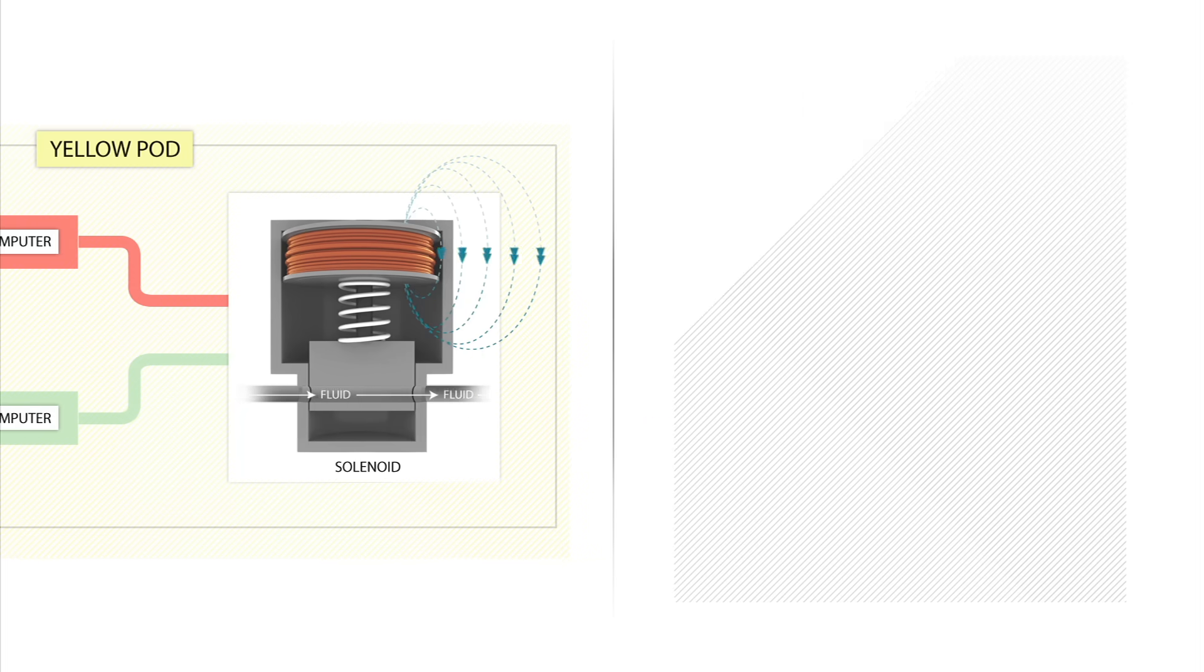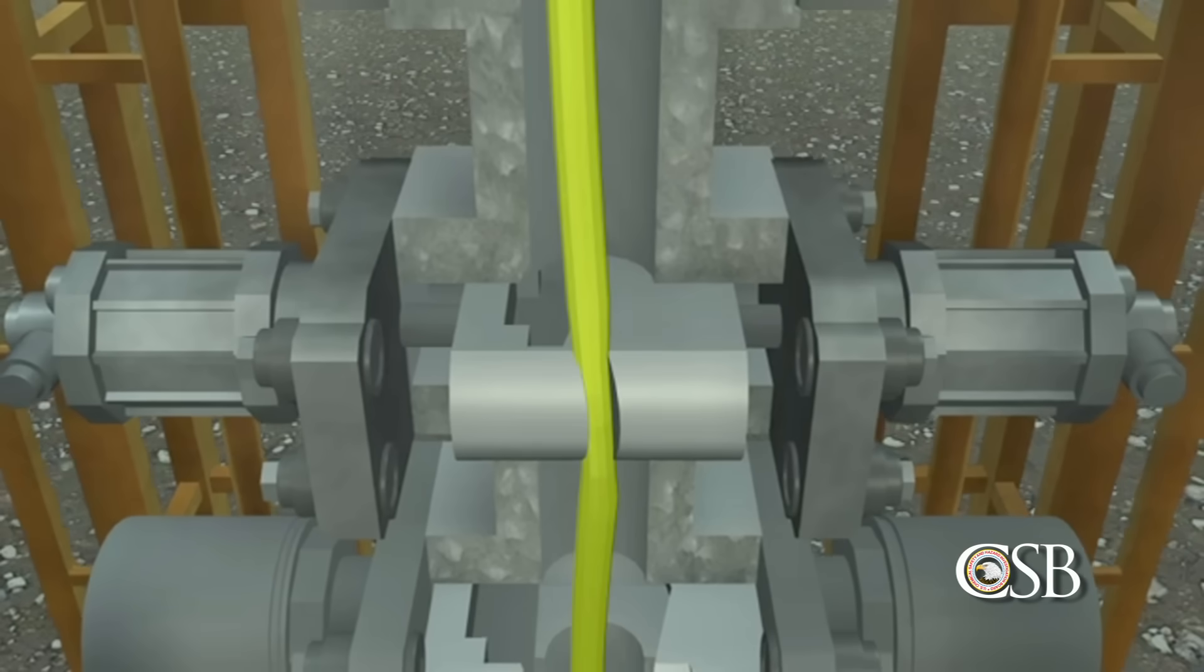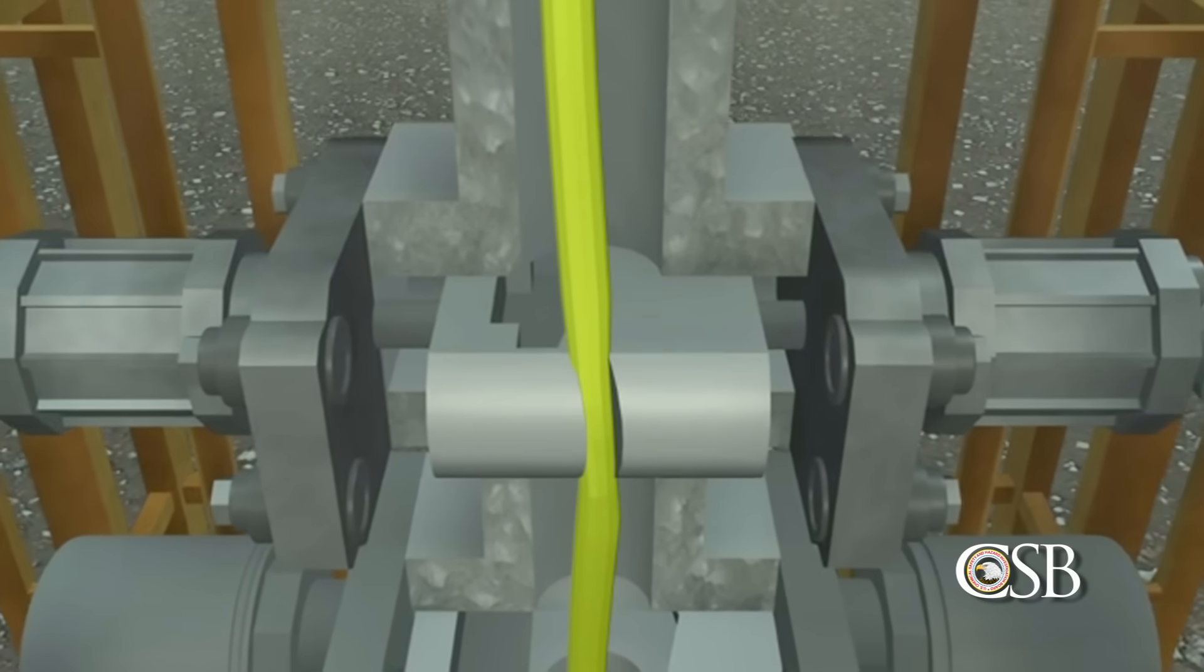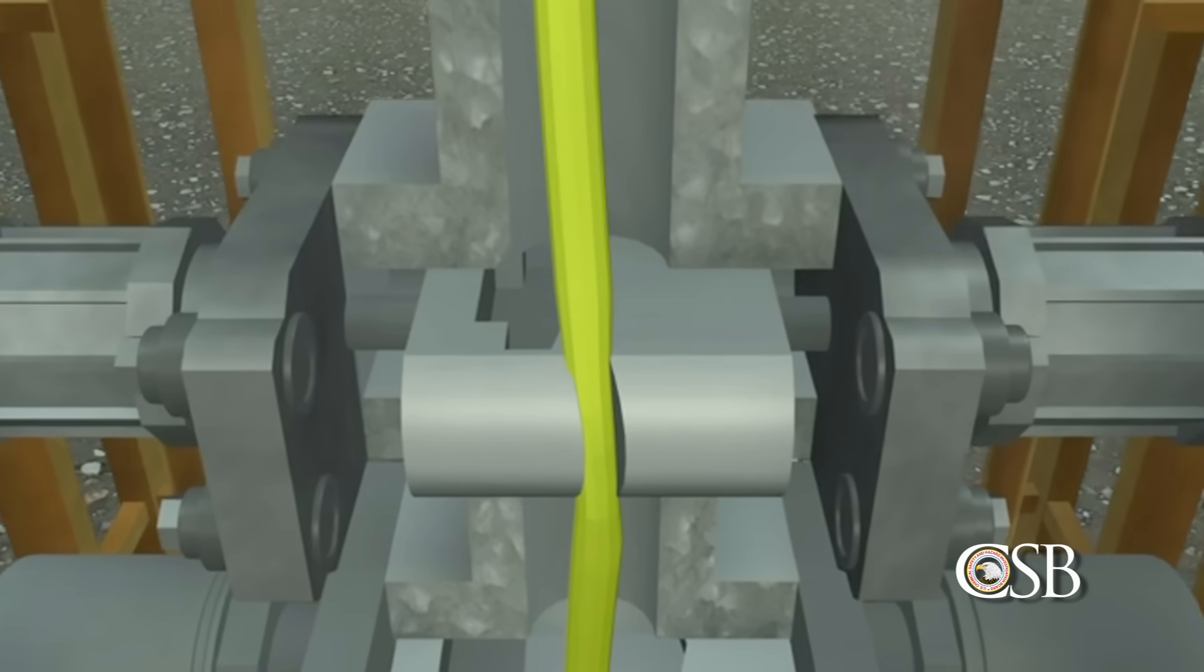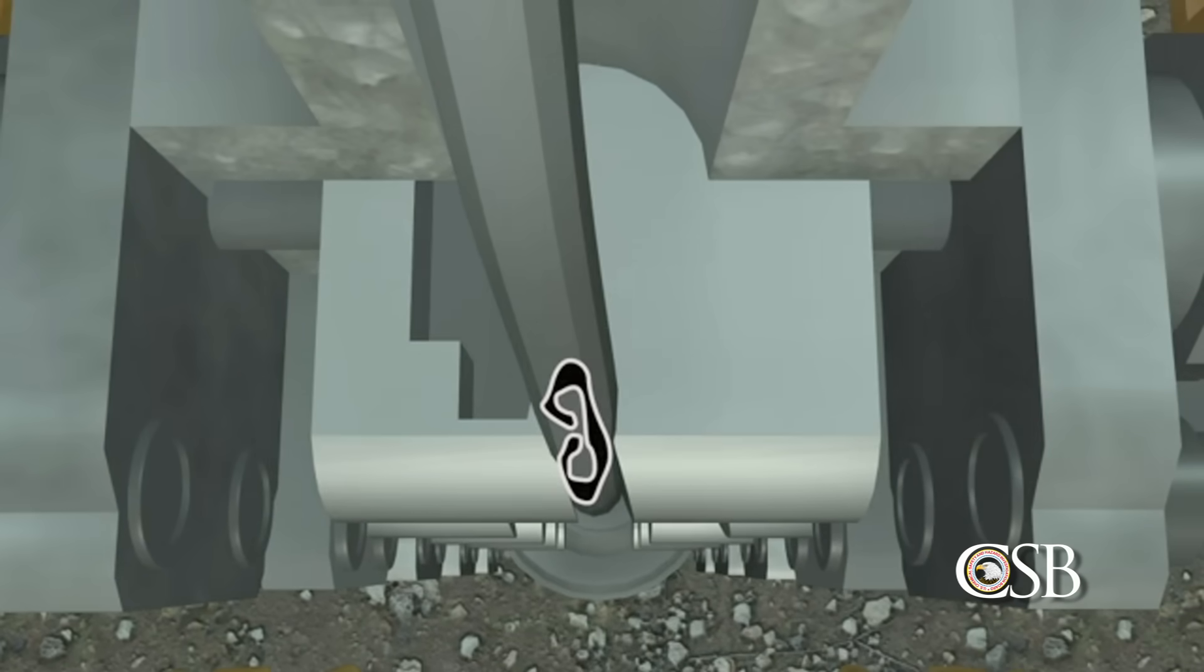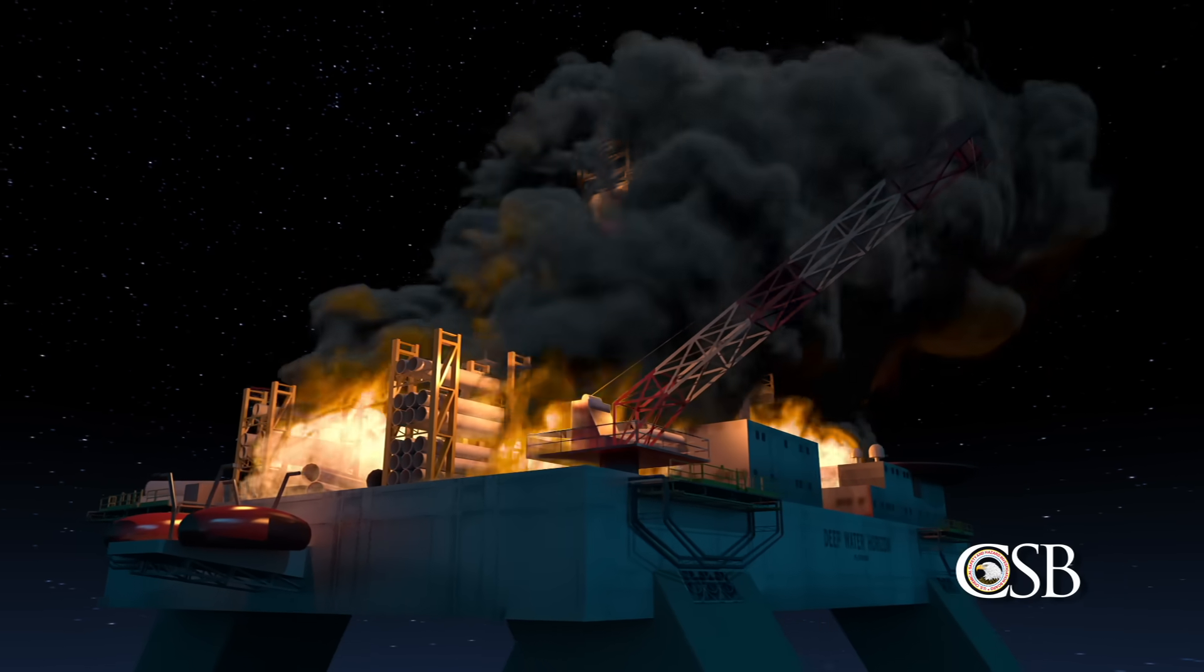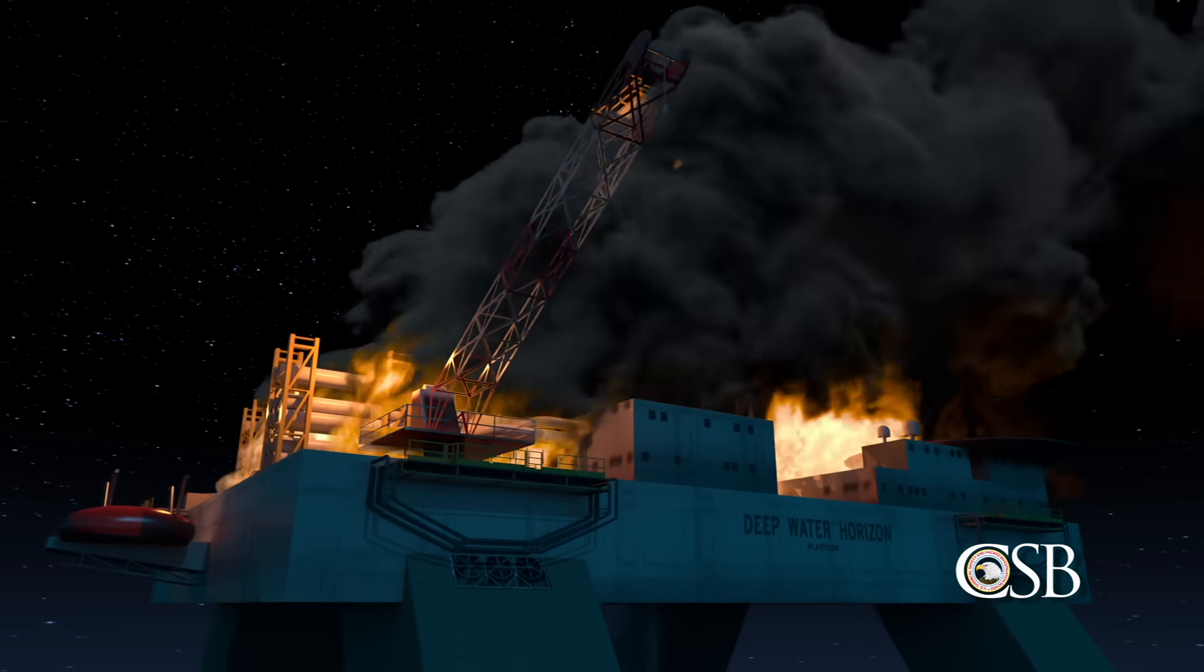This, in turn, initiated closure of the blind shear ram. This should have cut the drill pipe and sealed the well, greatly reducing the impact of the accident. But because the drill pipe was buckled and off-center inside the blowout preventer, it was trapped and only partially cut. With the failure of this last-ditch measure, there was nothing left to stop the massive oil spill and the destruction of the rig.